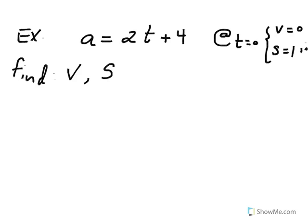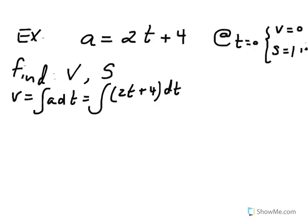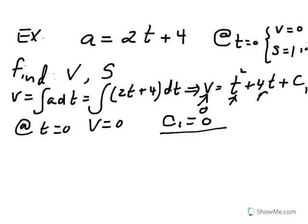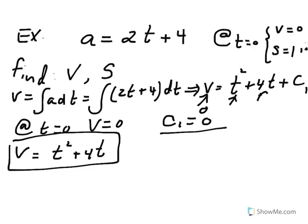Velocity is the integral of acceleration, so we take the integral of 2t plus 4, which gives us velocity equal to t squared plus 4t plus a constant of integration c1. Using the initial condition — at t equals 0, velocity is 0 — we plug in and get c1 equals 0. So velocity is t squared plus 4t.